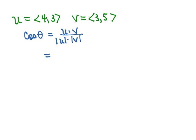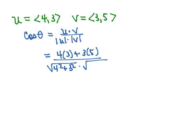So to find u dot v, we're going to have 4 times 3 plus 3 times 5 divided by the magnitude of u would be the square root of 4 squared plus 3 squared times the magnitude of v would be the square root of 3 squared plus 5 squared.